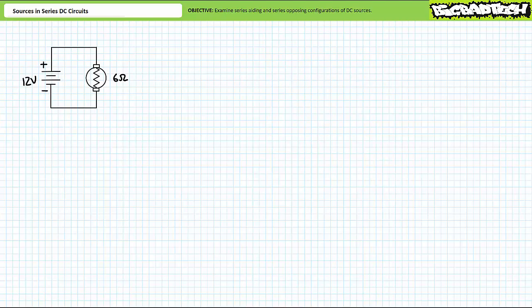Circuits with more than one source can and do exist. Perhaps the simplest arrangement being an inline or series arrangement of sources, of which two types exist: series aiding and series opposing. Long story short, sources in series add up accounting for their polarity. Allow me to demonstrate.